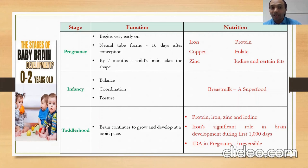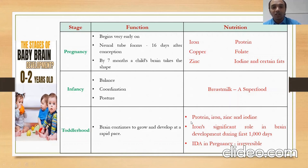In infancy, the primary functions of brain development are balance, coordination, and postural development. Breast milk is considered a superfood and plays a great role during infancy, with exclusive breastfeeding recommended for the first six months of life. In toddlerhood, brain development occurs at a rapid pace, and emphasis should be placed on protein-rich, iron-rich, zinc-rich, and iodine-rich foods. Iron's significant role in brain development cannot be ignored — iron deficiency anemia acquired in pregnancy is largely irreversible.